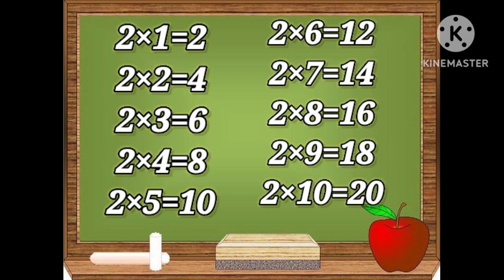Two ones are two, two twos are four, two threes are six, two fours are eight, two fives are ten, two sixes are twelve, two sevens are fourteen, two eights are sixteen, two nines are eighteen, two tens are twenty.